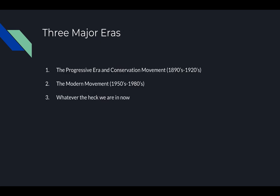In America, environmental politics has gone through three major eras: the first was the progressive era and the conservation movement from the 1890s through 1920s. Then we had the modern movement in the 50s through the 80s, and whatever era we are in now, which I will explain when we get there.